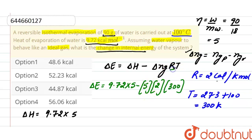Here the value of gas constant is in calories. Since the enthalpy change here is given in kilocalories, we will convert this gas constant into kilocalories by multiplying it by 10 raised to the power minus 3. After solving, the change in internal energy here will be 44.87 kilocalories.